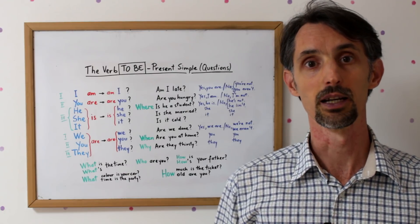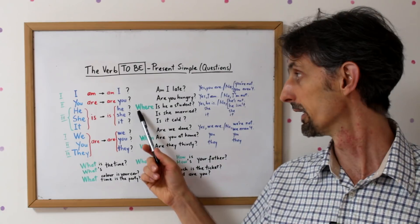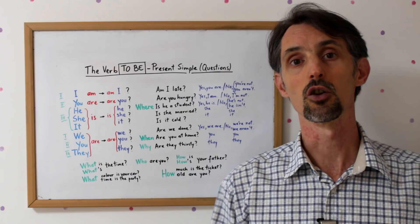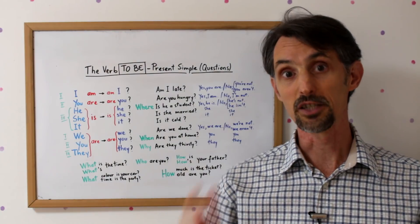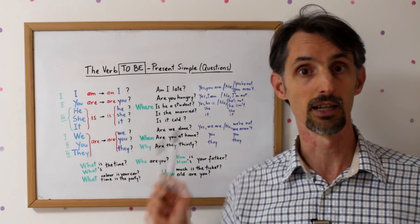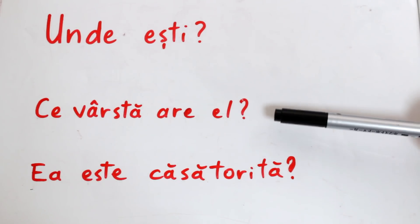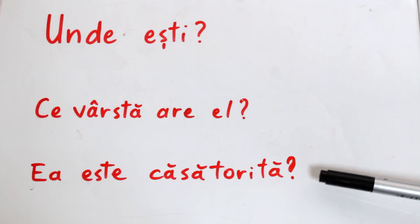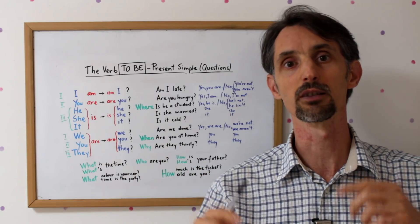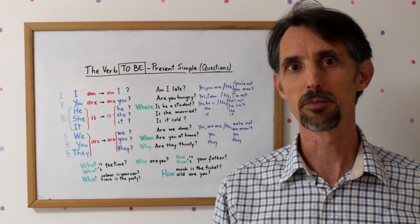De asemenea, vom discuta și despre așa numitele WH questions, întrebările WH, adică întrebări care încep cu aceste litere și care sunt echivalentele româneștilor ce, cine, cum, unde, etc. La sfârșitul acestei prezentări veți putea exprima în engleză enunțuri precum unde ești, ce vârstă are el, ea este căsătorită. Dacă apreciați ceea ce vedeți, vă invit să dați un like, un share sau să vă abonați la canalul nostru. Deci, let's begin! Să începem!